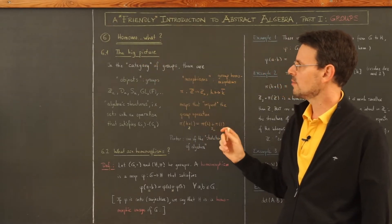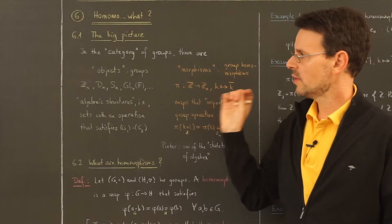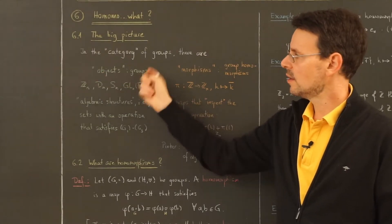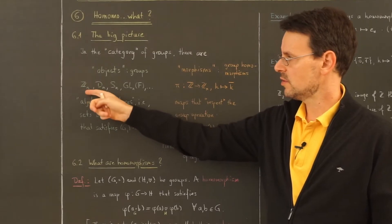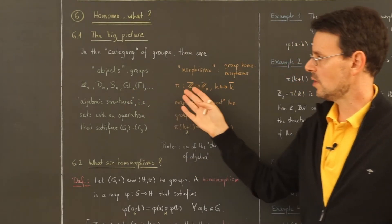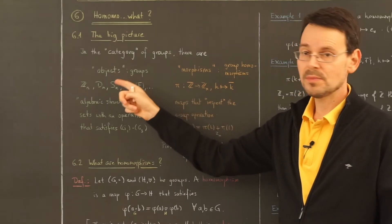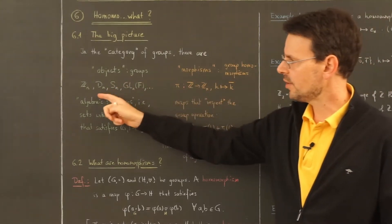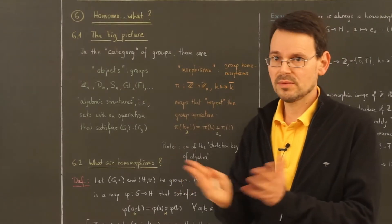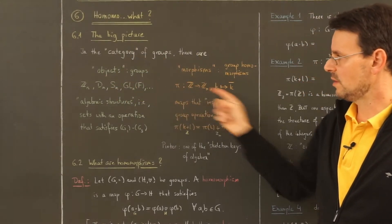Let me give you the big picture. Without defining these terms precisely, we are in the category of groups. In this category there are the objects — namely the groups — we have seen several examples: the integers modulo n, the dihedral groups, symmetric groups, group of invertible matrices, and so on. Then there are the so-called morphisms, which are the maps between those objects, and those maps actually help a lot in studying the structure of these objects. A category consists of objects and morphisms between those objects.